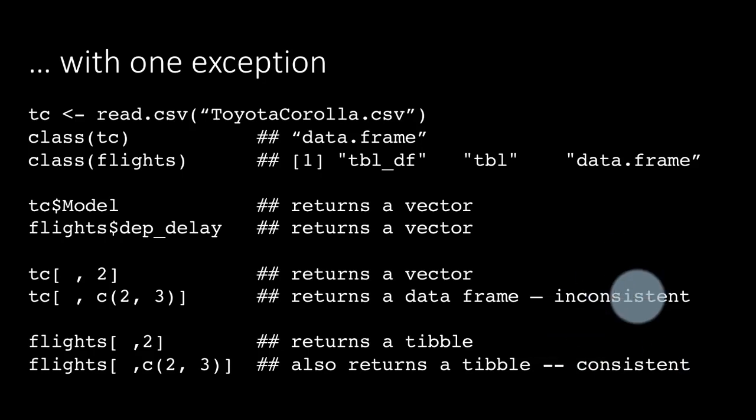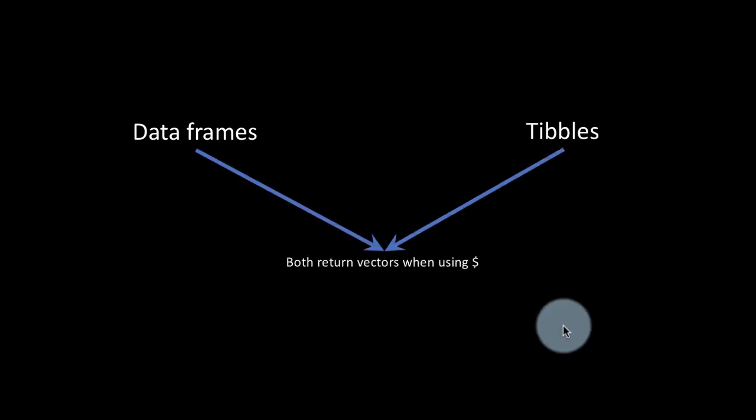So just to summarize what has happened. If you've got data frames or tibbles, those are the two things we've studied. Both of them return vectors when we use the dollar operator. So when we extract a column of either a data frame or a tibble using the dollar operator, both of them give us a vector as a result.